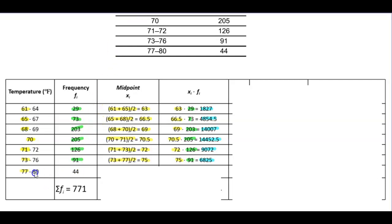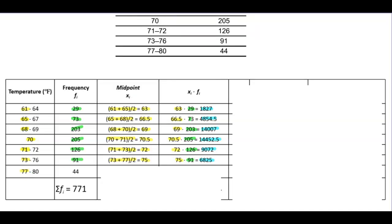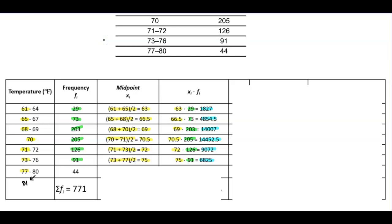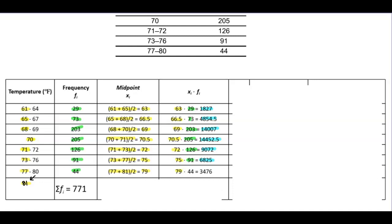Now we need to find the next midpoint. Since the previous class ends at 80, the next class starts at 81, making its lower class limit 81, even though we don't know the upper class limit. So we find the midpoint between 77 and 81: 77 plus 81 divided by 2 gives us 79. Multiplying 79 by the frequency of 44 gives us 3476.